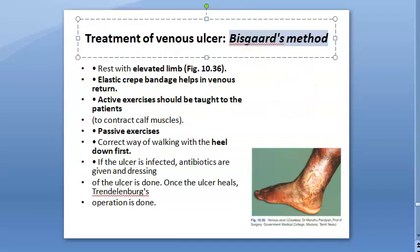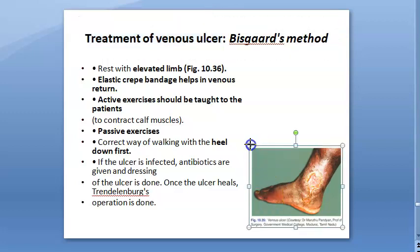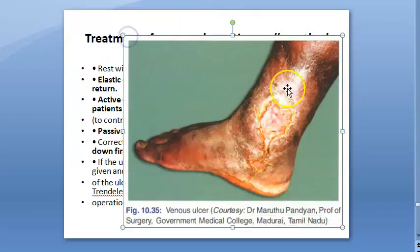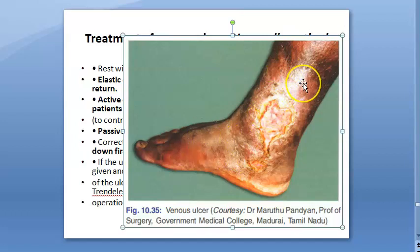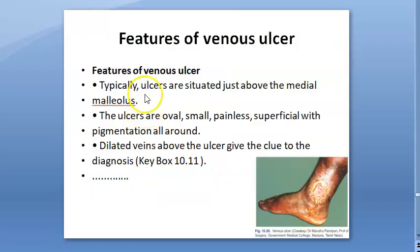Hello everyone. In this video we want to look at Biscard's method of treatment of venous ulcer. Here you can see the venous ulcer around the medial malleolus — this appears to be the right leg. So how do you know it's a venous ulcer? What are the features of a venous ulcer?